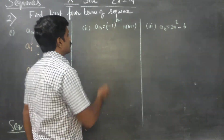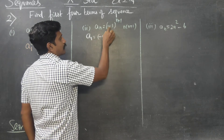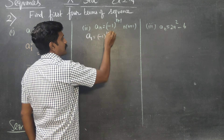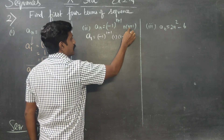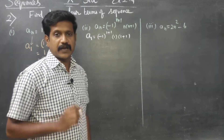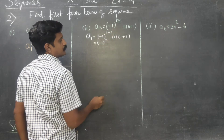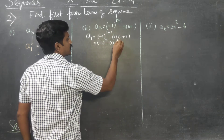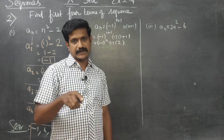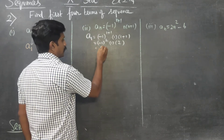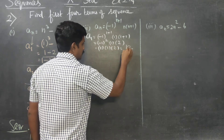Coming to the second sum: aₙ = (-1)^(n+1) · n(n+1). We start with the first term A1. Put n = 1: (-1)^(1+1) into 1 into (1+1). 1+1 is 2. (-1)² is plus 1. So 1 into 2 = 2. The first answer is 2.